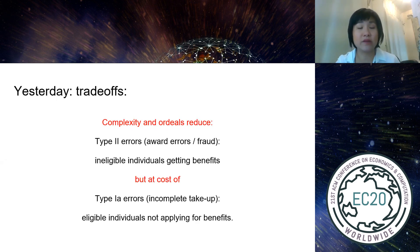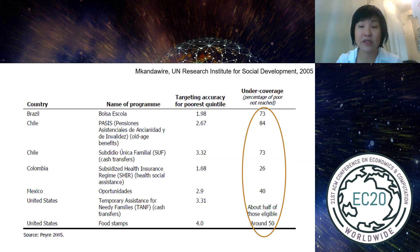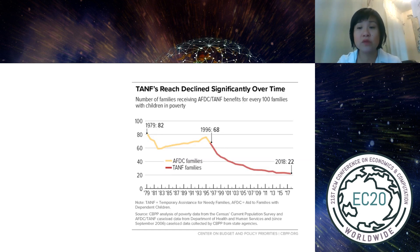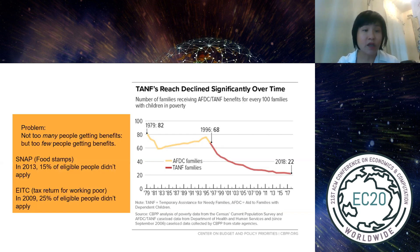This problem of the poor not getting benefits is widespread. In the Americas — Brazil, Chile, Colombia, Mexico — and in the United States, TANF only reached about half of those eligible. TANF was reaching 68% of families under poverty in the late 90s but is now only reaching about 22%. 15% of those eligible for SNAP and 25% eligible for EITC are not applying.